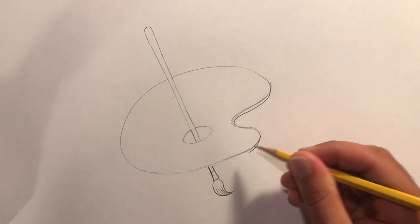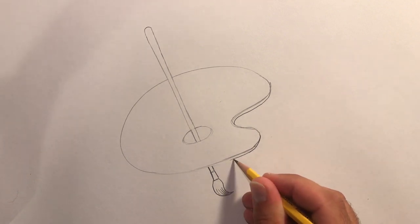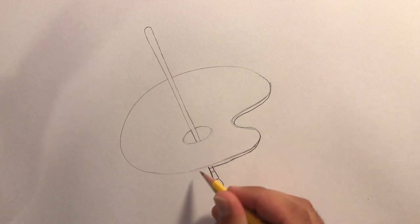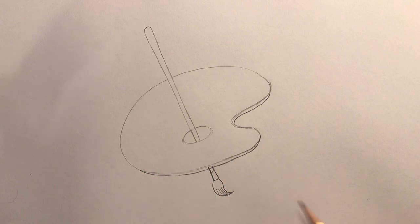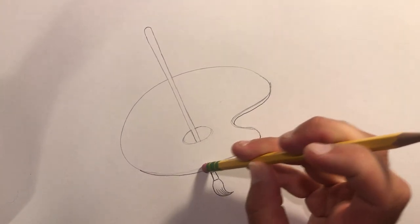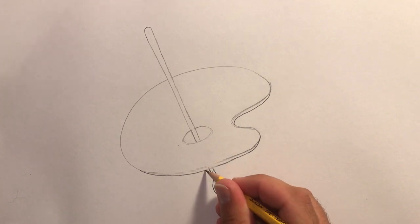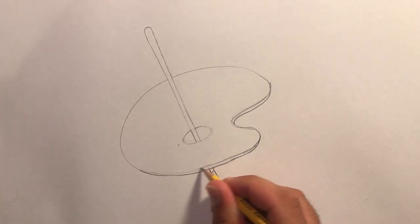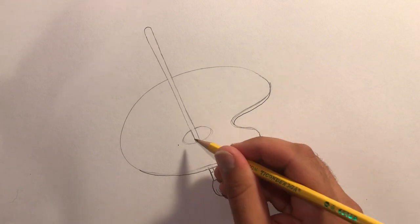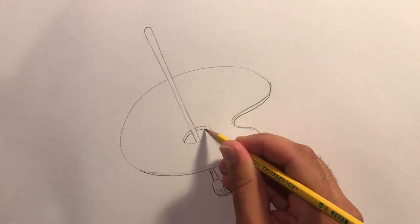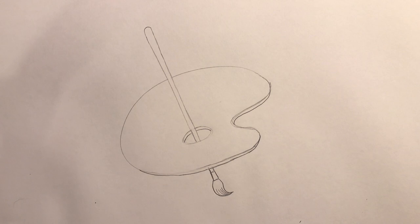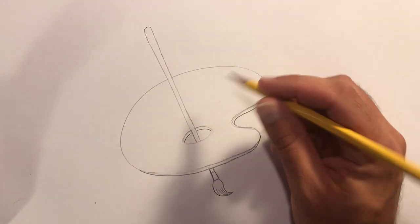You're going to add a line that comes across the bottom here. Erase that little extra too. Sometimes that happens when you overlap and you've got to erase what's behind it. And then we also have a curve here just to give this palette a little bit more 3D effect.